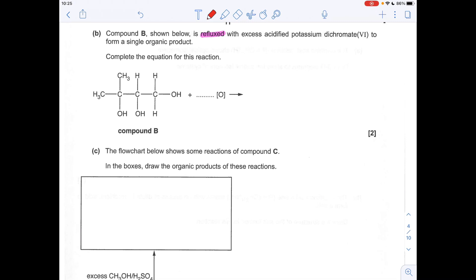So this one first, we've got a primary alcohol here. So under reflux, that will go to a carboxylic acid.